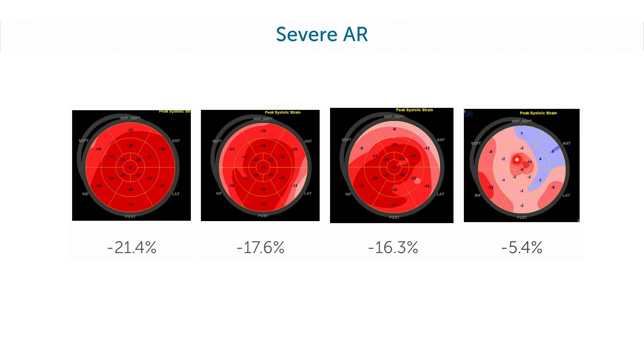So yes, speckle tracking mirrors ejection fraction. In this last case the patient was symptomatic, but the other patients were actually asymptomatic. What does that mean? Well, let me go back to the literature and take a look at what has actually been published and what other research groups have shown.